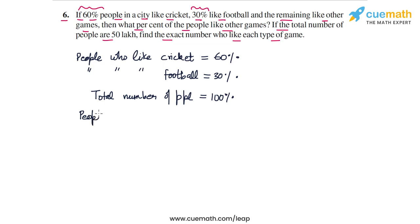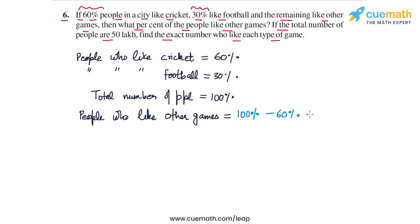The total number of people is 100%. So people who like other games equals 100% minus people who like cricket and football. That is 100% minus 60% minus 30%, which equals 100% minus 90%, which equals 10%. So people who like other games are 10% of the total.